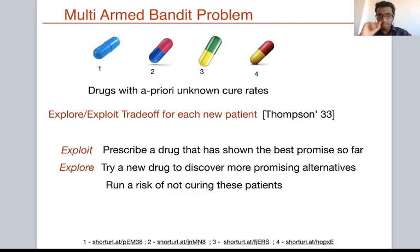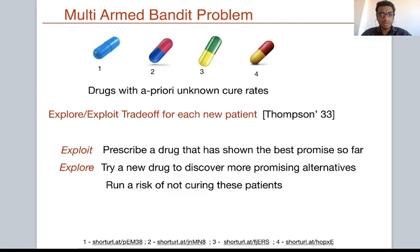This paper is about the multi-arm bandit problem, which is a canonical model to understand explore-exploit trade-offs associated with online sequential decision-making. A classical example, first studied by Thomson in his 1933 paper, is that of clinical drug trials. Suppose there is a set of drugs with a priori unknown cure rates, and this induces an explore-exploit trade-off where each time a new patient walks in, the doctor could either prescribe the drug that has shown the best promise so far or explore a new drug with the hope of discovering better alternatives, which also runs the risk of not curing this particular patient.